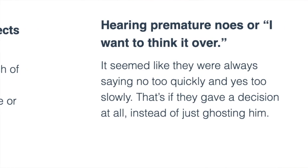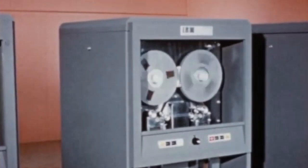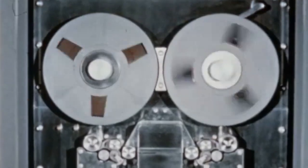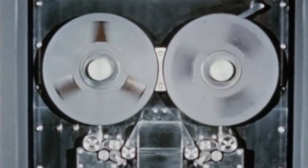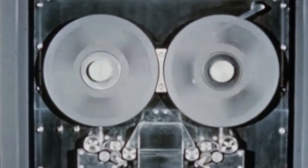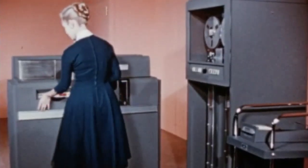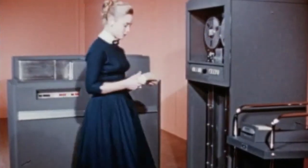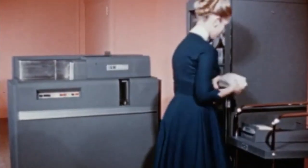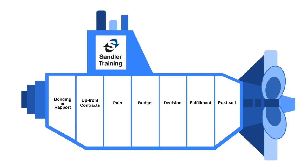So he invented something called the Sandler selling system. It was very simple — designed to build and sustain relationships with clients, qualify the opportunity, and close the sale. To visualize the system, he created something called the Sandler submarine. What's unique about Sandler is that it's the first sales methodology that talks about customer pain. What is now considered common language in a typical sales process was a brand new idea at the time.